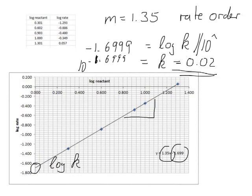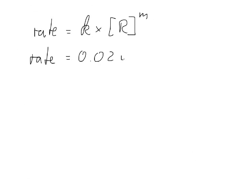Now of course what we need to do is we need to find out what is the unit of that. So what we can write is our rate equation. So we have rate equals k times reactant to the power of m. And if we put in our data we have rate equals 0.02 k times r to the power of 1.35.